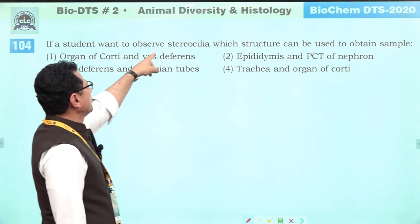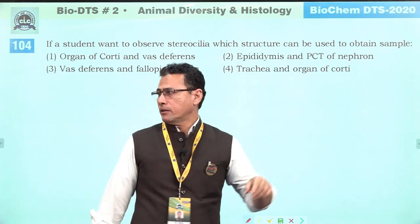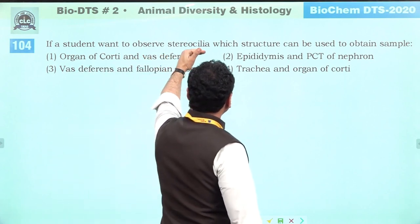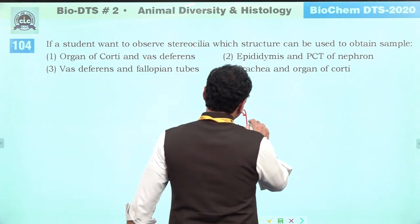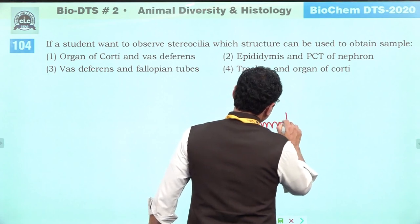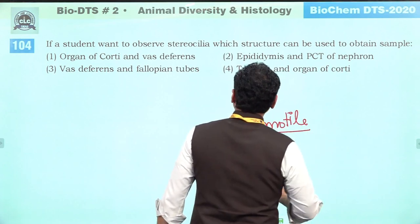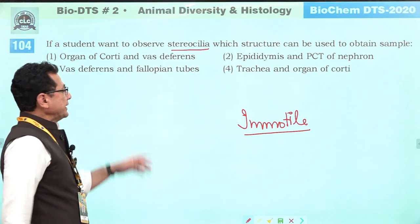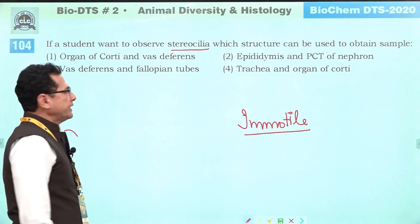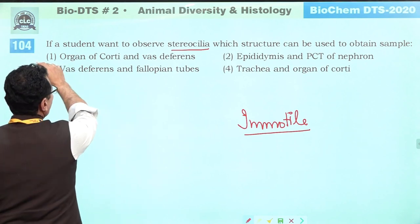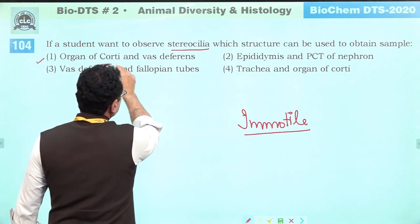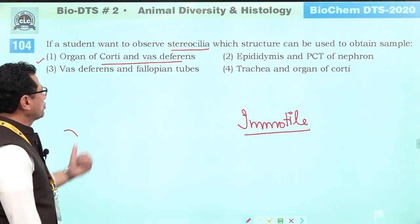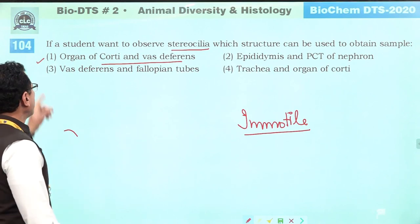If a student wants to observe stereocilia: stereocilia are immotile structures that increase surface area for absorption. In the organ of Corti they help in hearing. They are present in the epididymis and help in reabsorption of fluid produced by the testis. Answer is one.